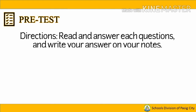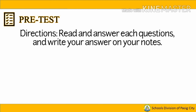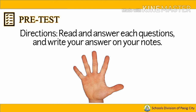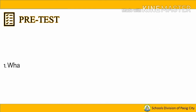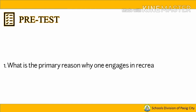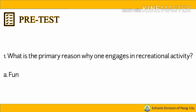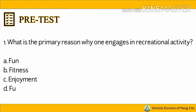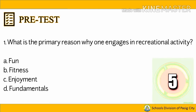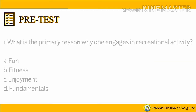Before we go to the text, let us do an activity first. Read and answer each question and write your answer on your notes. You have 5 seconds to answer each question. Question number 1: What is the primary reason why one engages in recreational activity? A. Fun. B. Fitness. C. Enjoyment. D. Fundamentals.